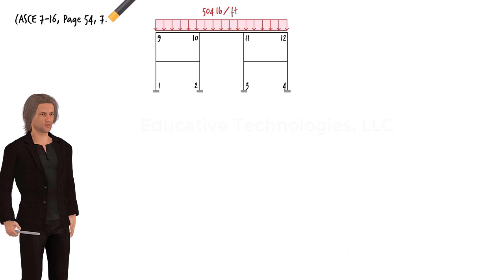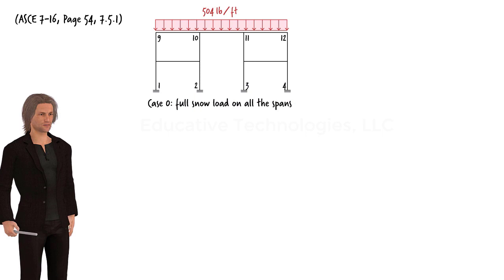Per ASCE 7-16, for the house under consideration, three partial loading cases should be considered. In addition to the full loading case, we need to examine the following three cases.